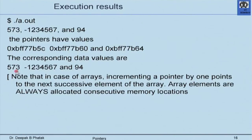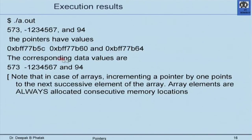Observe the output: the actual values are printed correctly, and the pointers have hexadecimal values confirming that each is exactly 4 bytes apart. The value ending in 5C, the next ending in 60 — exactly 4 bytes away — and 64, exactly 4 bytes from 60. This confirms that C++ always allocates consecutive locations to elements of an array. The consecutive locations will not be one byte apart but as many bytes as required to represent one value of that type — for float or int, that is 4 bytes.